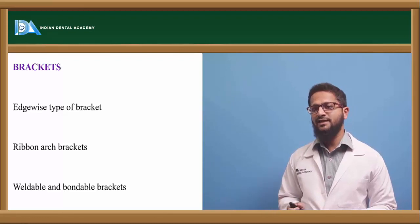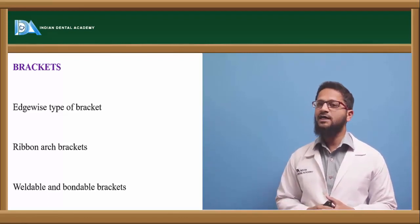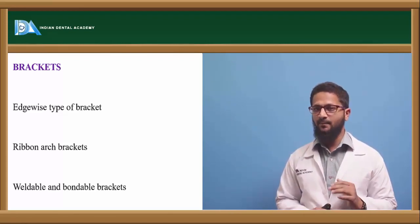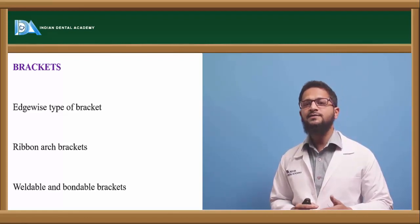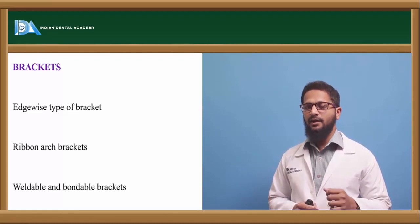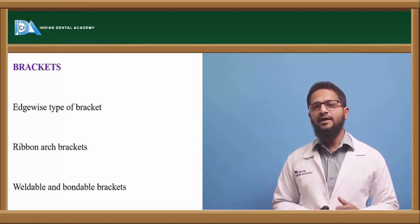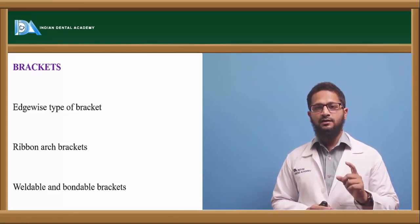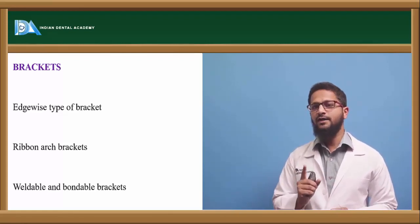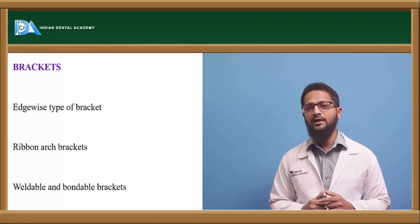Brackets are attached to bands or bonded directly to teeth. Brackets have evolved over time. The first type was the edgewise bracket; both edgewise and straight wire brackets have horizontal slots facing labially, with a rectangular cross-section that accepts rectangular wires. Edgewise brackets allow precise tooth movement but tipping is a bit difficult. Ribbon arch brackets have vertical slots facing incisally or cervically, with a round cross-section that accepts round wires. Ribbon arch brackets are most commonly used in the Begg technique, which employs differential force technique.